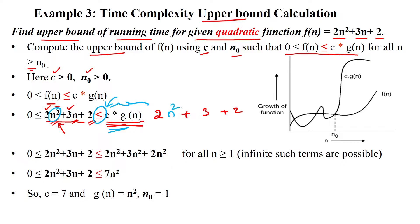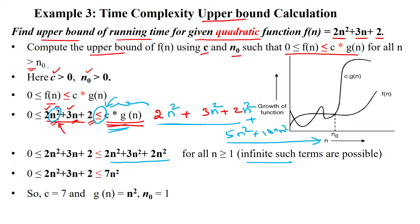The higher-order term is n², so we replace each term with n² and add them up: 2n² + 3n² + 2n² gives 7n². There are an infinite number of possible terms, but we use the coefficients from f(n). Doing that addition, we get 7n².